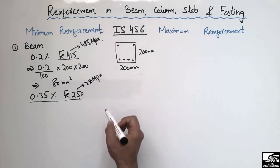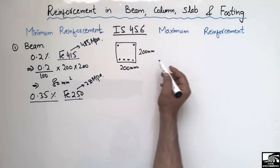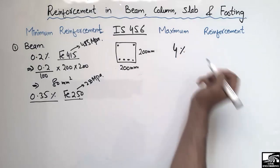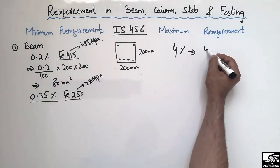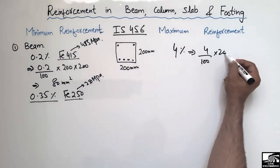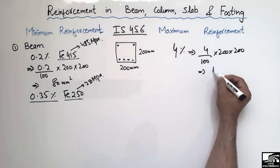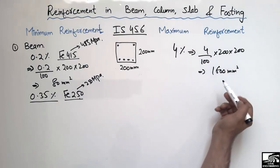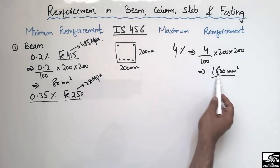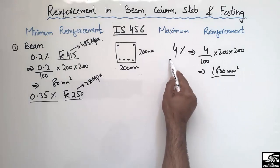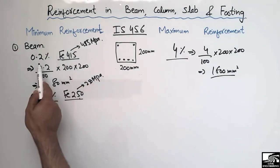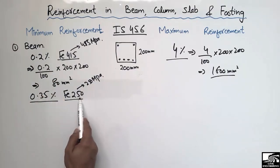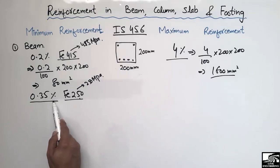The maximum reinforcement requirement for the beam is 4 percent of the beam cross-section area. Using the same example beam, the maximum reinforcement will be 4/100 × 200 × 200, which comes out to be 1600 square millimeters. We should not provide more than this area of steel bar. So the maximum reinforcement for the beam is 4 percent, and the minimum depends on the grade of steel: 0.2 percent for Fe415 and 0.35 percent for Fe250.